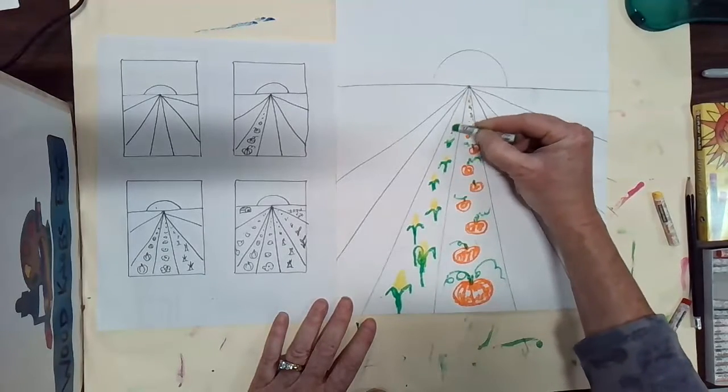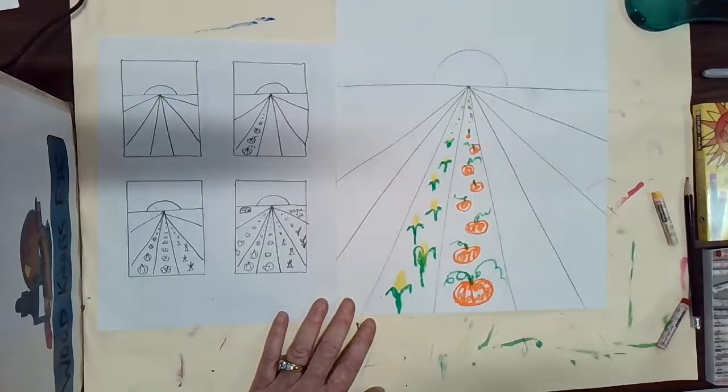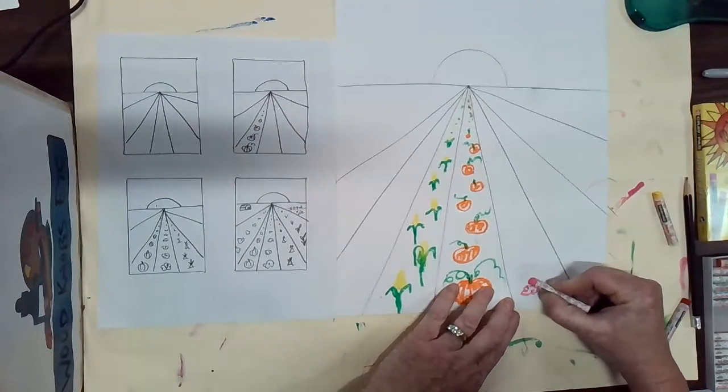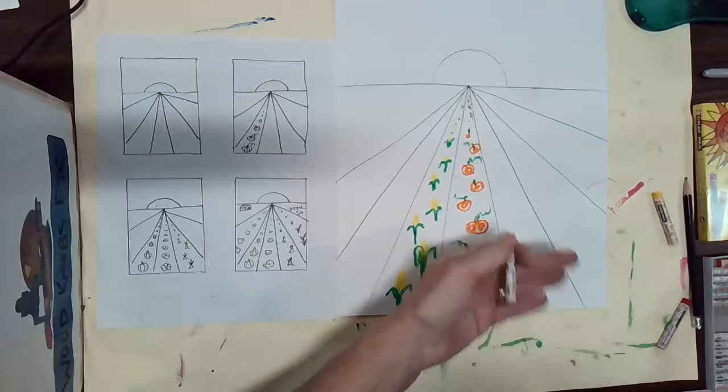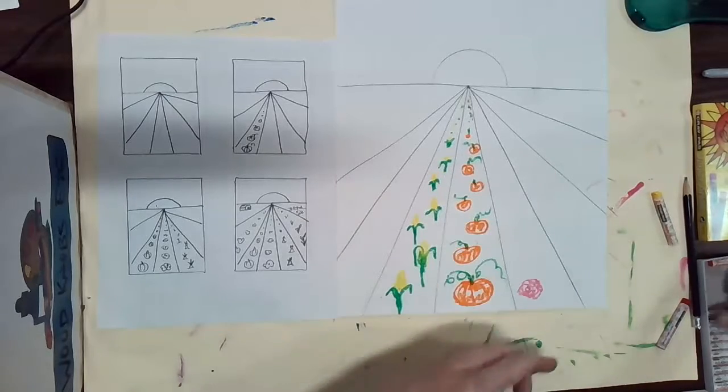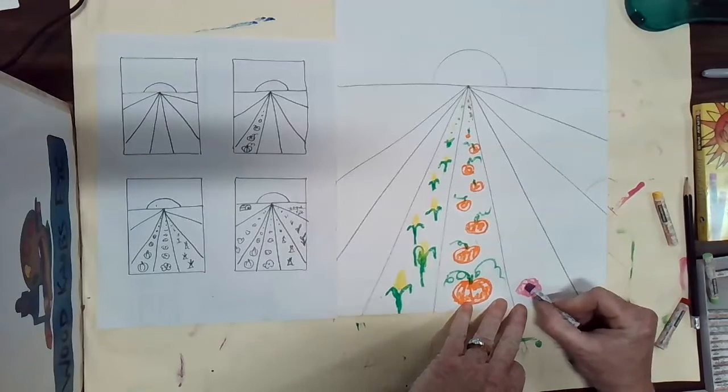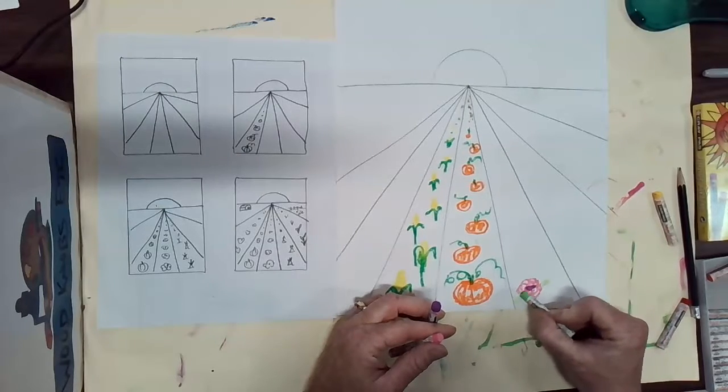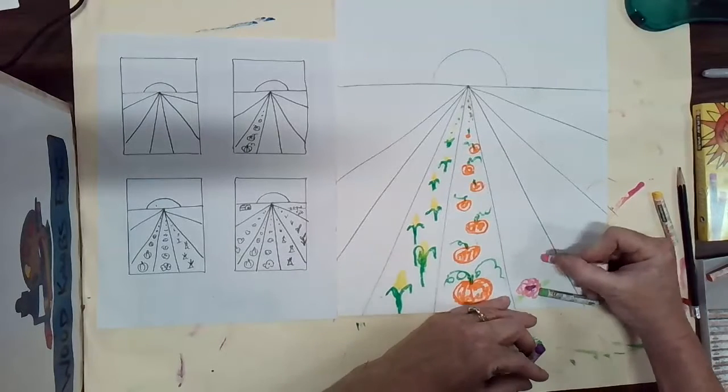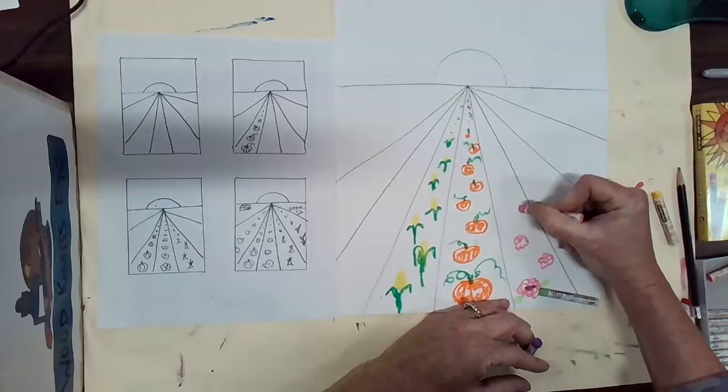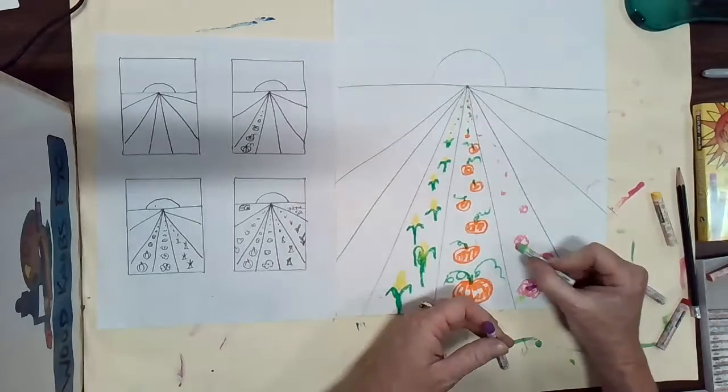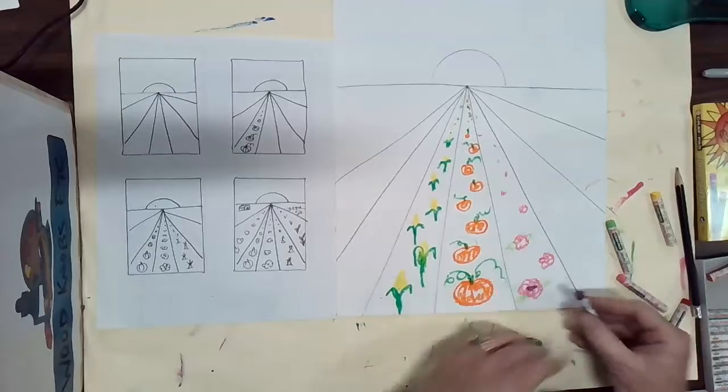I might add some flowers in my field maybe. I'll make some pink flowers over here and again in the foreground, it's called closest to us. You might see a lot of detail. I might see the center of that flower. I might see some leaves. And as I go back they're going to get smaller and smaller and smaller and you'll see less detail as you go.